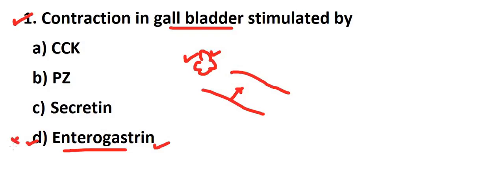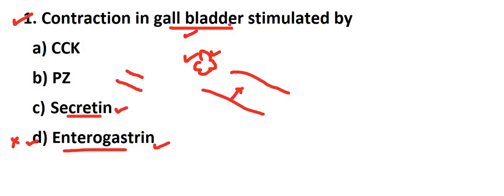So option D is not possible. Option C - secretin - is secreted by the duodenum portion of our body. When there is more acidity or more fat content, the duodenum secretes secretin. And what does secretin stimulate? It stimulates the liver and pancreas. So if the question is about liver or pancreas stimulation, secretin is the right answer.